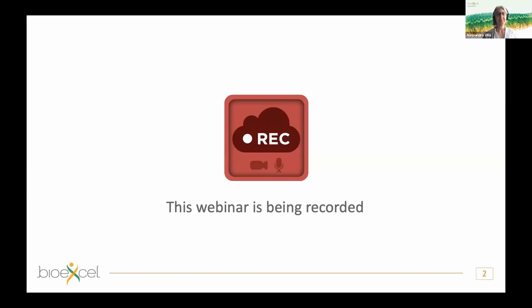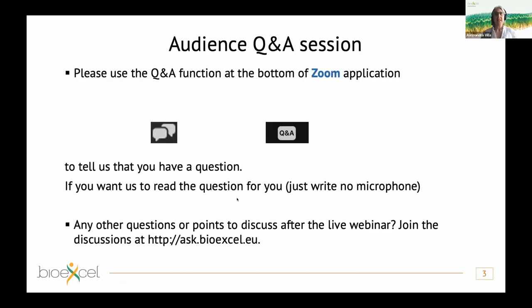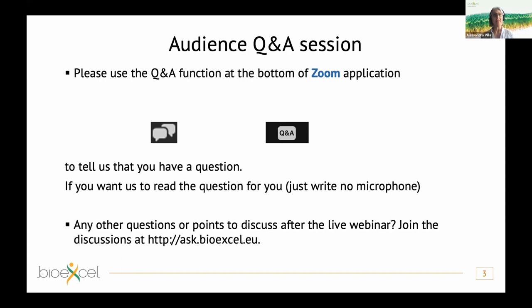The webinar is recorded and you have the possibility to ask questions using the Q&A function at the bottom of the Zoom application. Depending on which operating system you have, you might have different symbols — just click on the symbol and write down your question. Tell us if you have a microphone or not. If you want us to read the question for you, write 'no microphone.' For future questions about BioXcel activity, you can go to askBioXcel.eu.